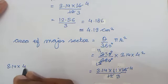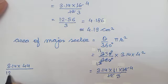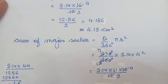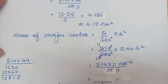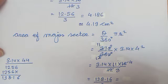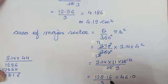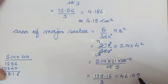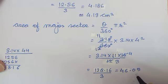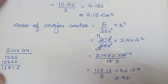3.14 into 44: 4 se multiply karein toh 12.56, giving 138.16. Phir 3 se isko divide karein: 3 4s are 12, decimal lagaiye, 3 5s are 15. Toh 46.05 aaya. Toh 5 ho ya 5 se upar ho toh usko round off karein. Book mein 46.1 diya gaya hai.